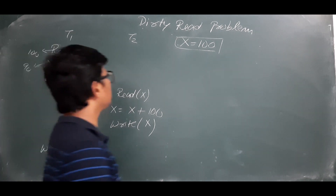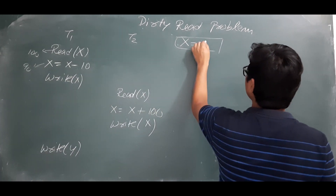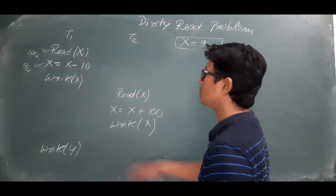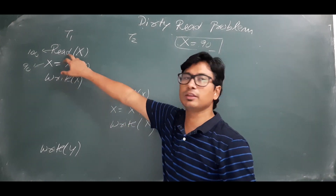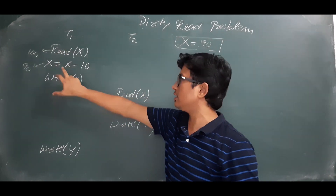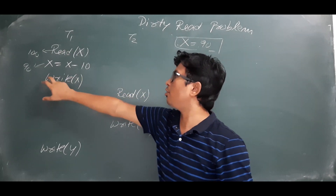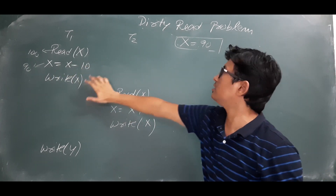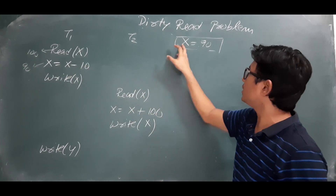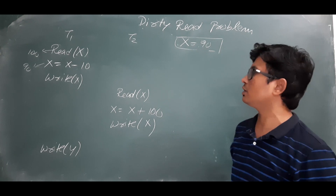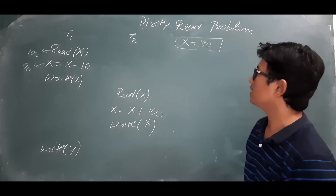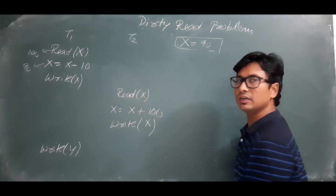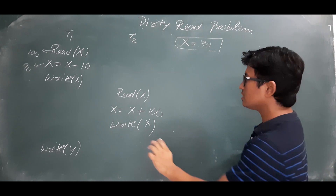T1 writes x, so what value is being written? It is temporarily modifying x to 90 because it is saving it. You have read the value as 100, modified it to 90, and temporarily saved it, so in memory x is equal to 90.